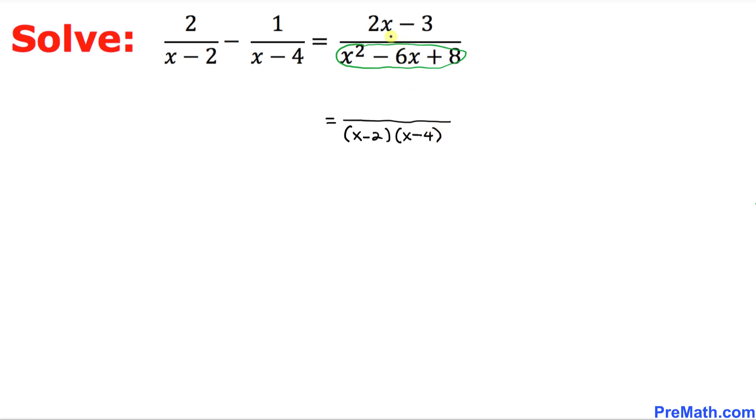Alright, so we're going to leave everything as it is. 2x minus 3 is going to be on the numerator. And on the left-hand side, we're going to keep this fraction as it is: 2 over x minus 2 minus 1 over x minus 4.